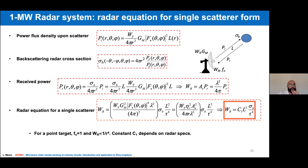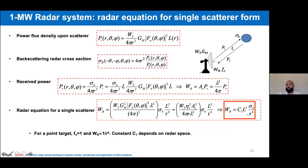If we talk about a single target, we can observe different typical quantities in a radar system: the incident power density, the radar cross section — which is the elementary surface of a target detected by the electromagnetic wave and is responsible for the scattered electromagnetic wave — and the received power. From this relationship we can derive the radar equation, which relates the radar cross section, target distance, path loss terms, and the electronic and antenna features of the radar.